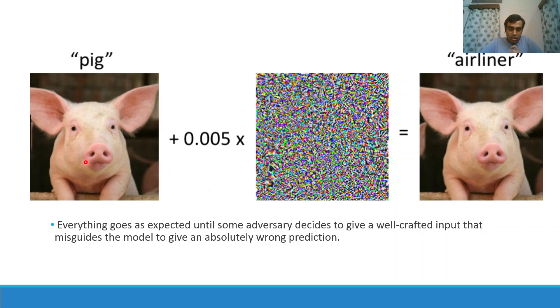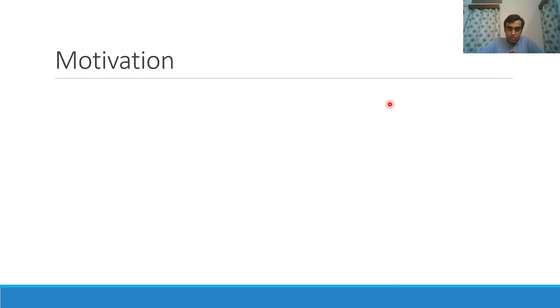Think of this picture of a pig which is correctly classified as a pig. Now we add some noise to generate another picture. Both these pictures are same to the human eyes, but for a neural network it thinks that this new picture is that of an airliner. So let's see what are the motivations for performing such adversarial attacks and why we need to make the models more robust.